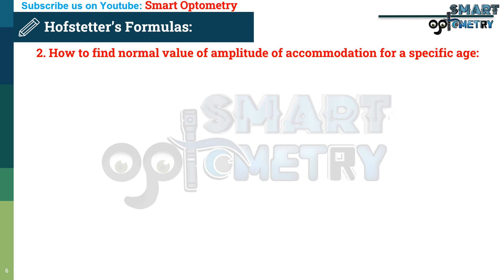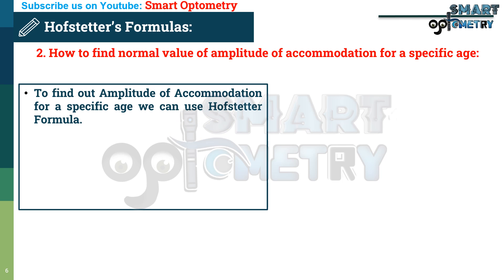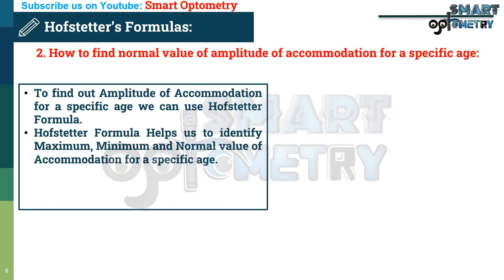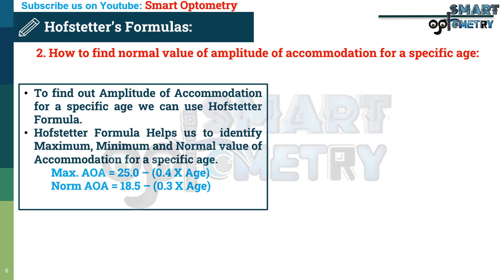To find the normal value of amplitude of accommodation for a specific age, we can use Hofstetter's formula. Hofstetter's formula helps us identify the maximum, minimum, and normal value of amplitude of accommodation for a specific age. Maximum amplitude of accommodation equals 25 minus 0.4 multiplied by age. Expected normal amplitude of accommodation equals 18.5 minus 0.3 multiplied by age. Minimum amplitude of accommodation equals 15 minus 0.25 multiplied by age.